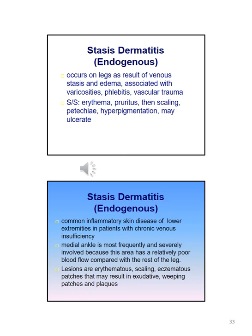Stasis dermatitis usually occurs on the legs as a result of venous stasis and edema. It's associated with varicosities, phlebitis, and vascular trauma. Signs and symptoms include erythema, pruritus, scaling, petechia, hyperpigmentation, and it may ulcerate. It is a common inflammatory skin disease of the lower extremities in patients with chronic venous insufficiency. The medial ankle is most frequently involved. Lesions are erythematous, scaly, eczematous patches that may result in exudative weeping patches and plaques.